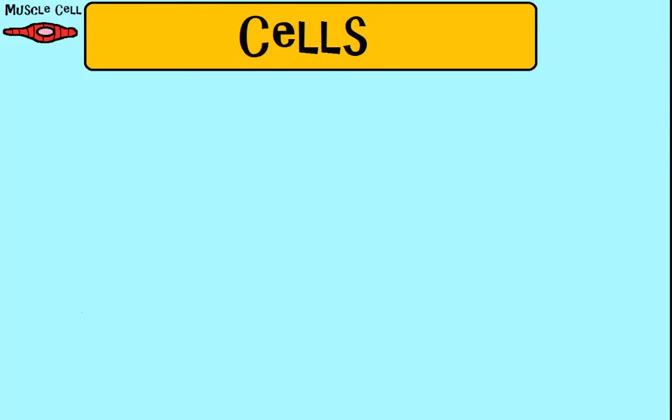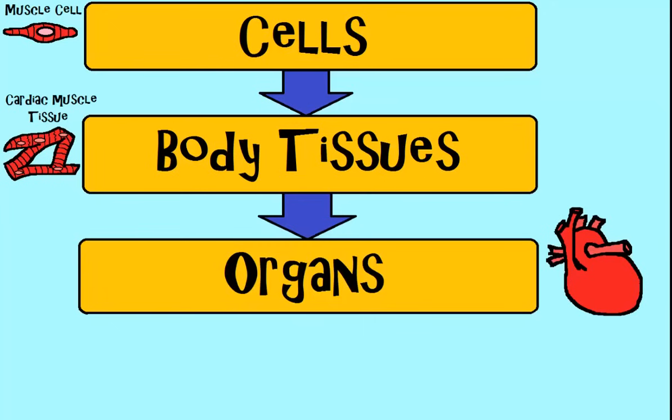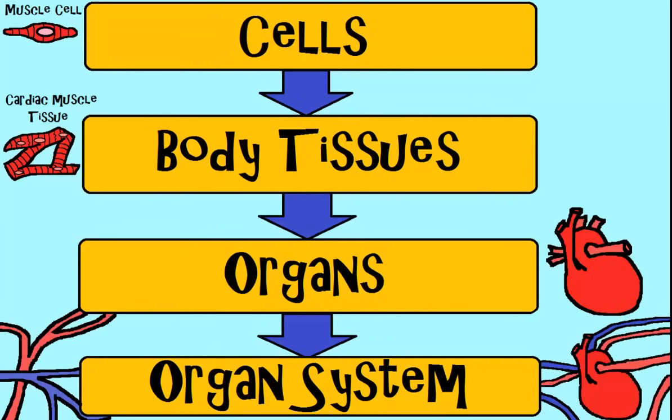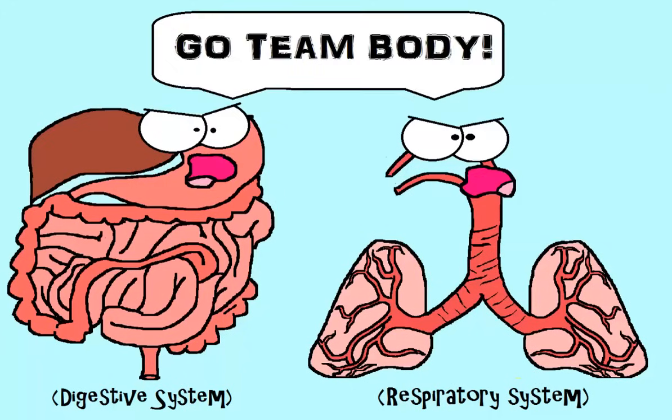Your cells make up body tissues, and tissues make up organs like your heart for example. And organs are part of an organ system like your circulatory system. One thing to keep in mind is that organ systems do not work in isolation. They are not loners. They work together and they are part of a big team.